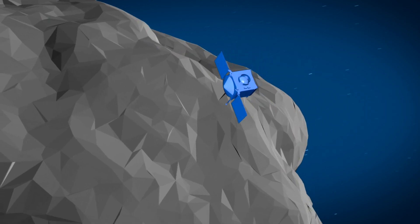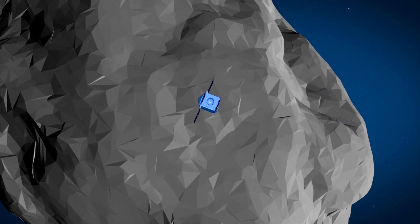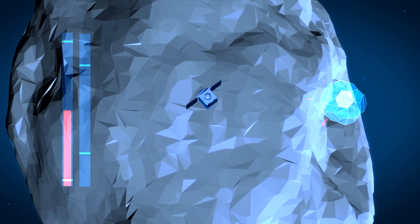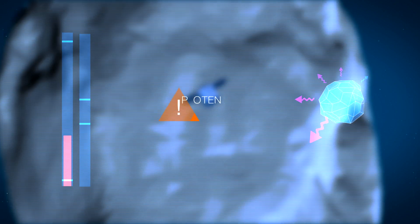By studying the Yarkovsky effect on Bennu with the OSIRIS-REx spacecraft, NASA scientists hope to better predict how an asteroid might move through the solar system, and whether it poses any danger to us here on Earth.